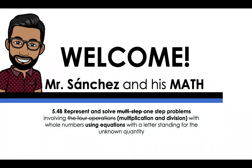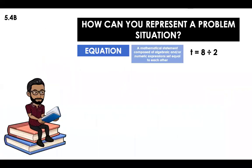Welcome to Mr. Sanchez and his math. Today we're going to be working with 5.4b: representing one-step problems involving multiplication and division with whole numbers using equations with a letter standing for the unknown quantity.